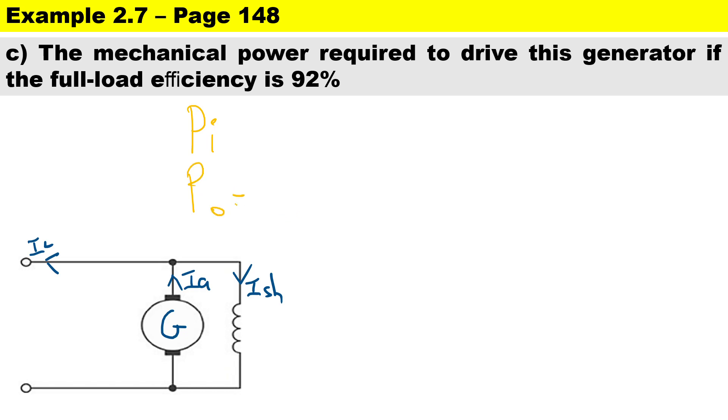So remember the input power is bigger and the output power is smaller. Now to calculate the output power, we need the supply voltage and we need the supply current. Supply voltage is 300 times the supply current of 50 amperes, that means the output power is 15,000 watts.